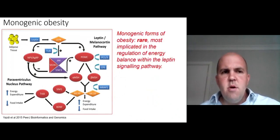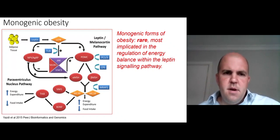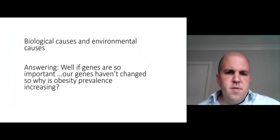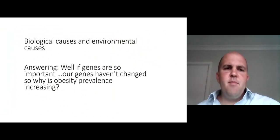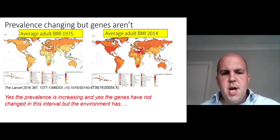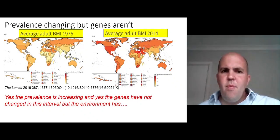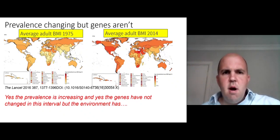Monogenic obesity, also called single-gene obesity, is quite rare, and most of these genes are implicated in the regulation of appetite and energy balance. People say genes are important but our genes haven't changed, yet obesity prevalence is increasing. I'd say yes, our genes haven't changed, but the world we live in and the environment we're surrounded by has changed markedly in quite a short time frame.